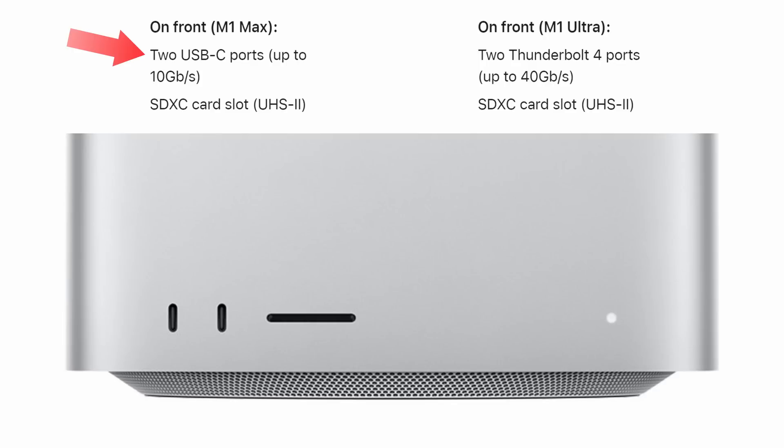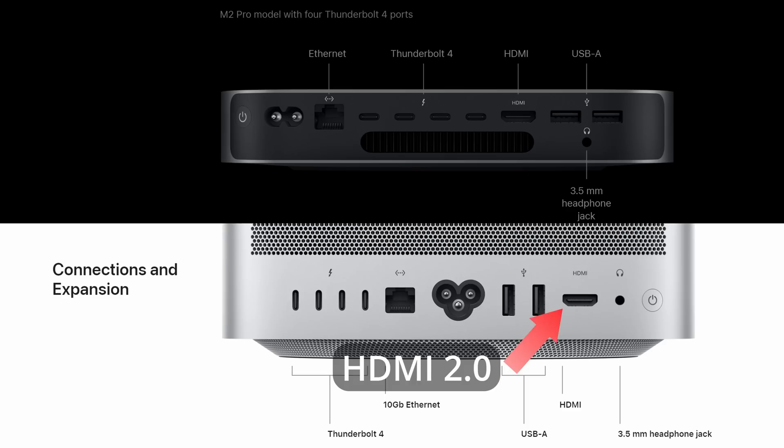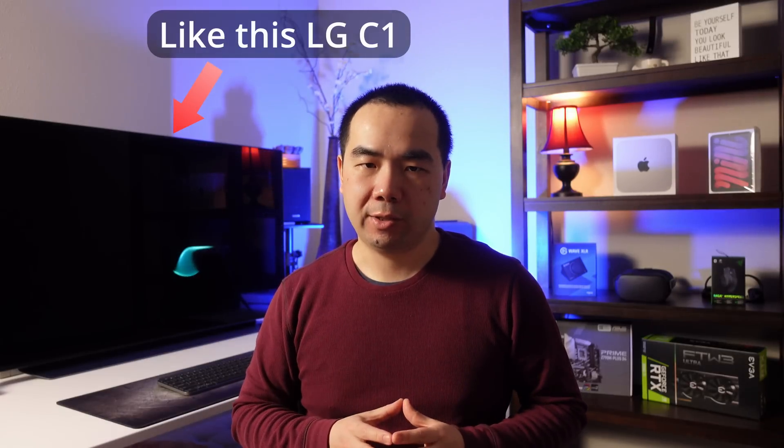The Mac Studio also has more ports on the front side: two USB-C 10 gigabit per second ports and an SDXC card slot with UHS-II speeds. Before we declare the Mac Studio the clear winner in expansion ports, however, we need to acknowledge one key advantage of the newer generation — the M2 Pro Mac Mini has an HDMI 2.1 port, while the Mac Studio only has HDMI 2.0. HDMI 2.1 is critical if you want higher resolutions and refresh rates on displays with only HDMI input, such as 4K 120Hz TVs.